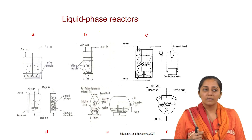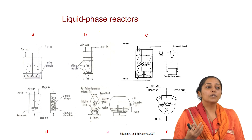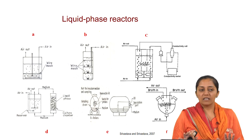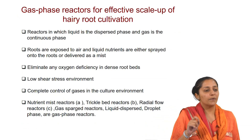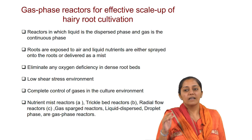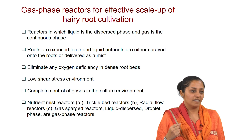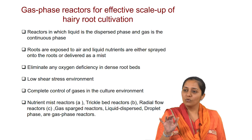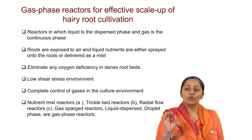What can be a way to overcome this problem? You need support, the roots are self-immobilizing, you cannot disperse them — so how do you improve mass transfer? This leads to gas phase reactors, where the liquid is dispersed into the gaseous medium. For example, trickle bed reactors or mist bioreactors where the media is provided in the form of a cloud and mist onto the roots, which are kept on the support system. When this was done, there was significant improvement in the growth of the roots.